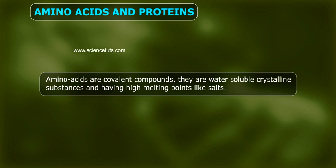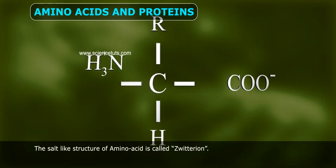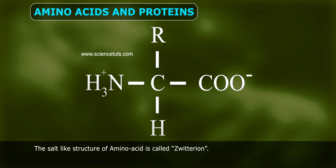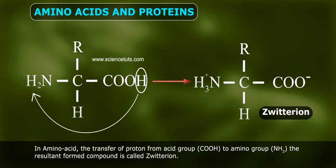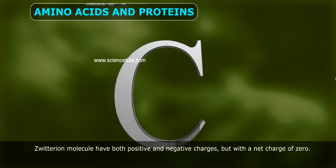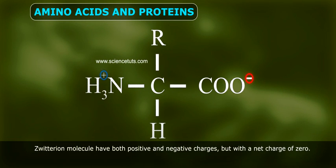Amino acids are water-soluble, crystalline substances with high melting points, like salts. The salt-like structure of an amino acid is called a zwitterion. In an amino acid, the transfer of a proton from the acid group (COOH) to the amino group (NH2) forms a compound called a zwitterion. The zwitterion molecule has both positive and negative charges, but with a net charge of zero.